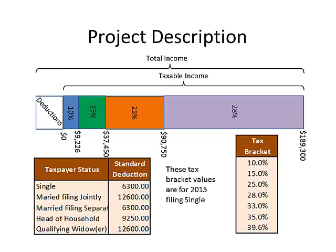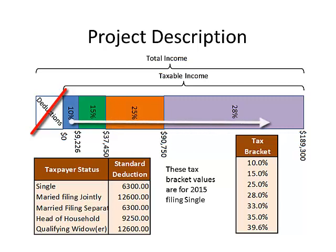Here's a diagram for a single taxpayer status. Deductions and exemptions are taken off first from total income, and then tax is applied starting at 10%, 15%, 25%, 28% — showing the first four tax brackets — going all the way up to 39.6%.